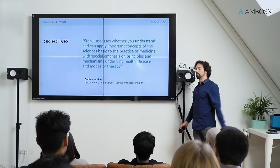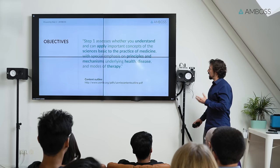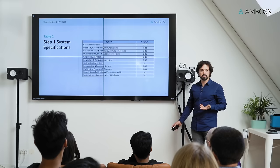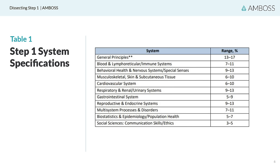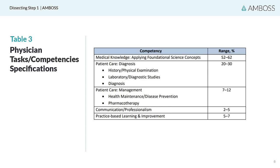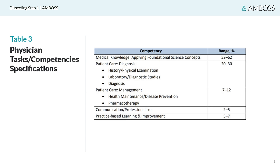You can go find out all the things asked about on the content outline — it's 37 pages. We at AMBOSS have already done this with our material. Going over some of the systems here: everything you're going to be studying in medical school. Here are physician tasks and competencies — the things they want you to do in the exam. About half the questions involve applying foundational science concepts. Some go into diagnosis, some into management, and a minority focus on communication and practice-based learning.